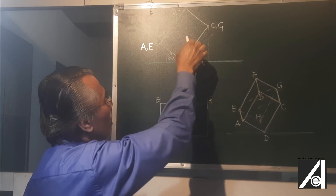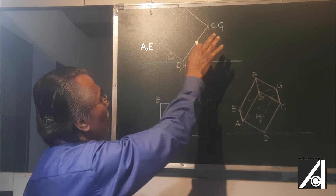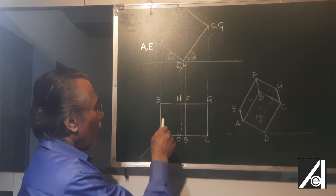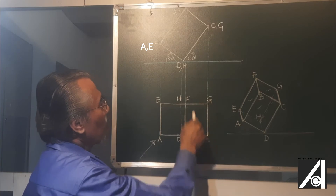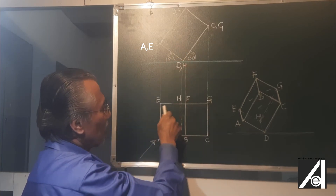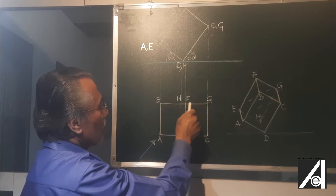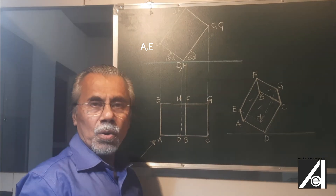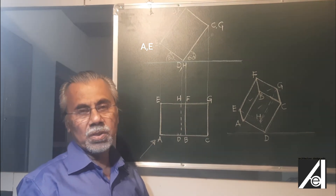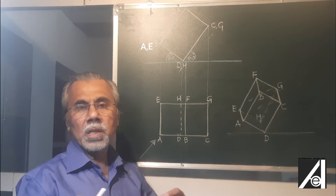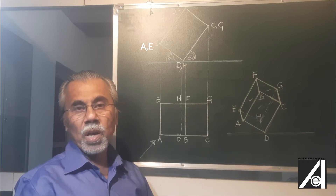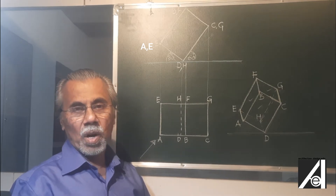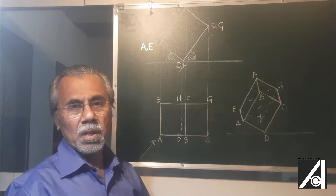So now this cuboid consists of 12 edges and 6 planes, which you already know. The orthographic projection of the same cuboid in a tilted position comes like this. Now in order to draw the sciography we have to first give coordinates for all the edges. As you know there are 12 edges to the cuboid, so all 12 edges require coordinates.